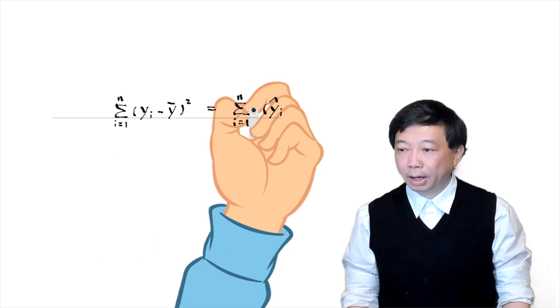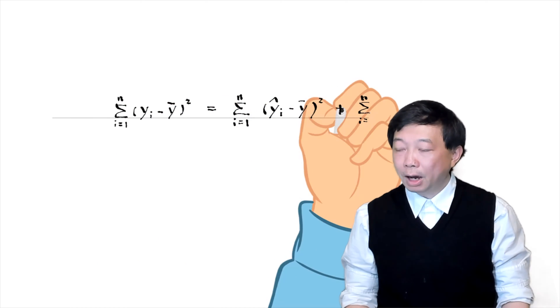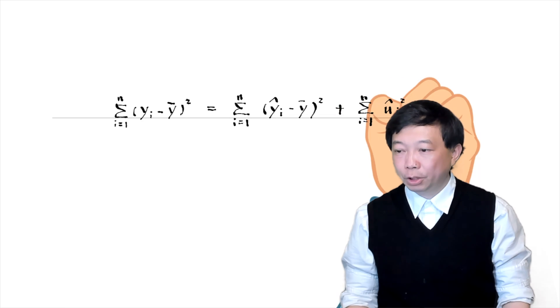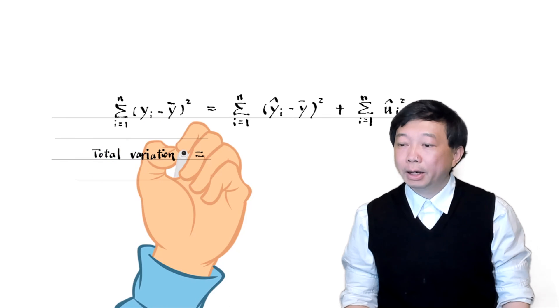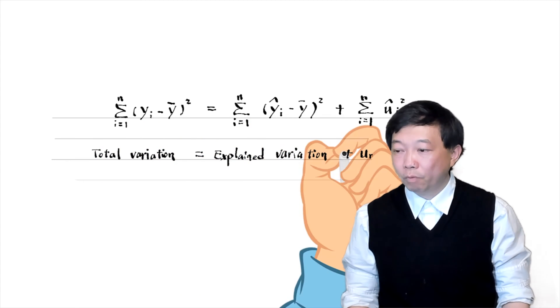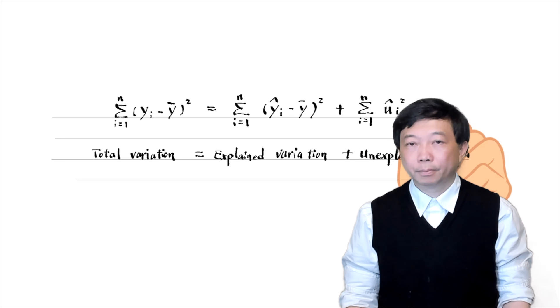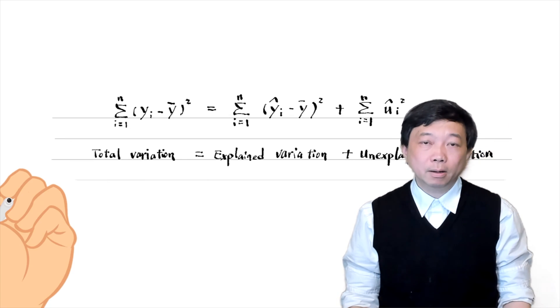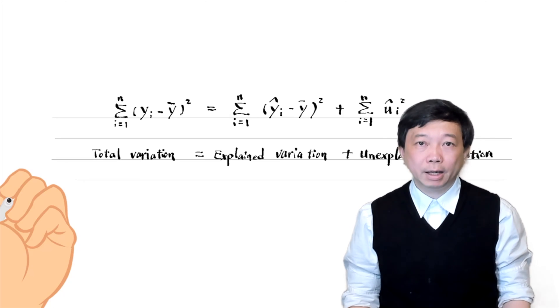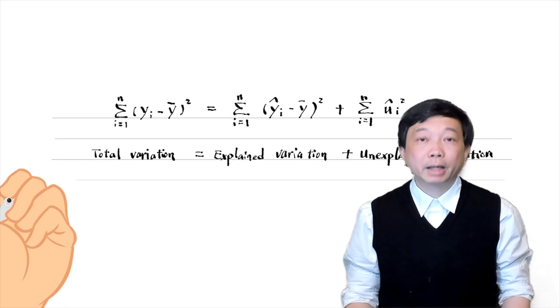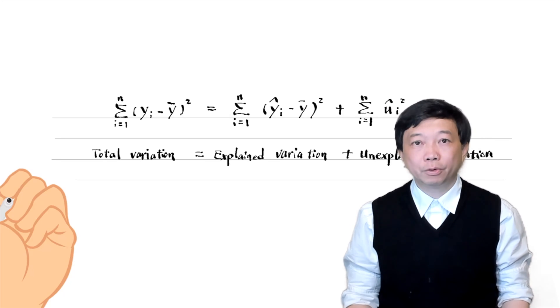It can be proved that SST equals SSE plus SSR. In other words, the total variation in yi can always be expressed as the sum of the explained and unexplained variations. It's important to remember the relationship between the three variations.